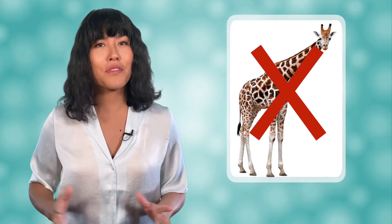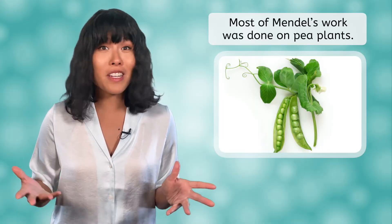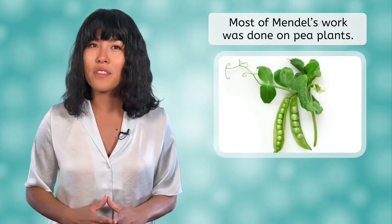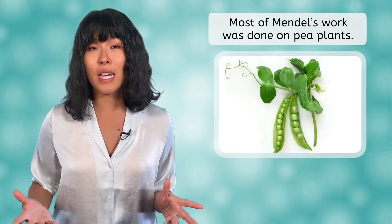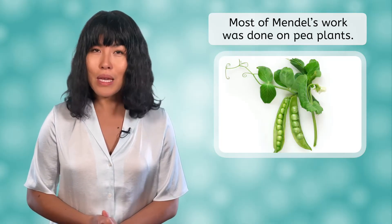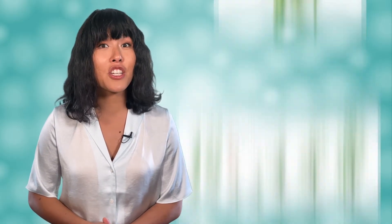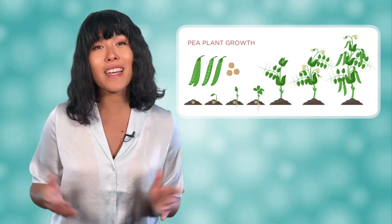For being called the father of genetics you might assume that Mendel worked with some type of exotic organism like a giraffe. But no, most of his studies were done on pea plants. Just normal garden pea plants. After all this is what was readily available to him at the monastery. Pea plants also have the advantage of being cheap and growing quickly and easily.